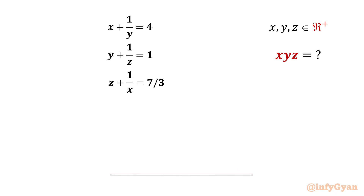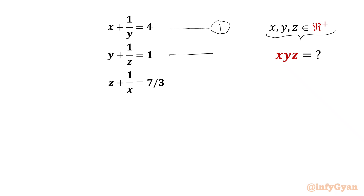Here we have to find out x, y, z. If x plus 1 over y is 4, y plus 1 over z is 1, and z plus 1 over x is 7 over 3, given that x, y, z belong to positive reals. Let's get started — we call these equation 1, equation 2, and equation 3.